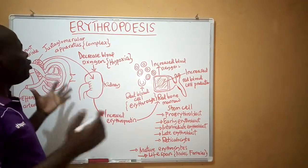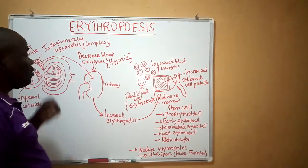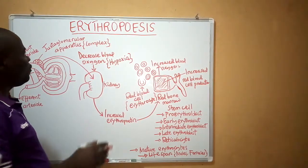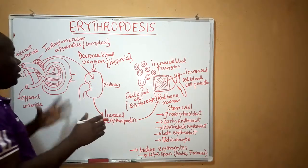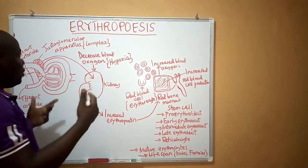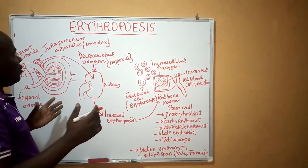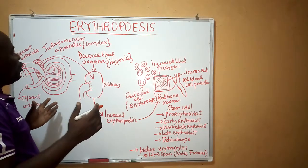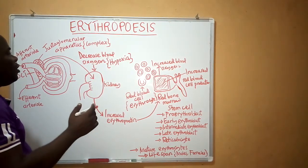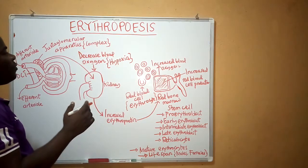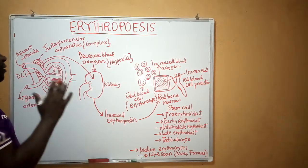Erythropoiesis is the process of producing red blood cells that takes place at the central part of the bone known as the red bone marrow. Red blood cells are very crucial in transporting respiratory gases, mostly oxygen and carbon dioxide, reversibly between the lungs and our body tissues in human beings as well as vertebrates.